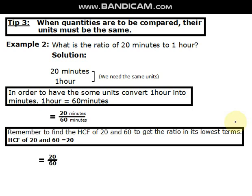Now, 20 divided by 20 is equal to 1 and 60 divided by 20 is equal to 3. So, lowest terms is 1 over 3.